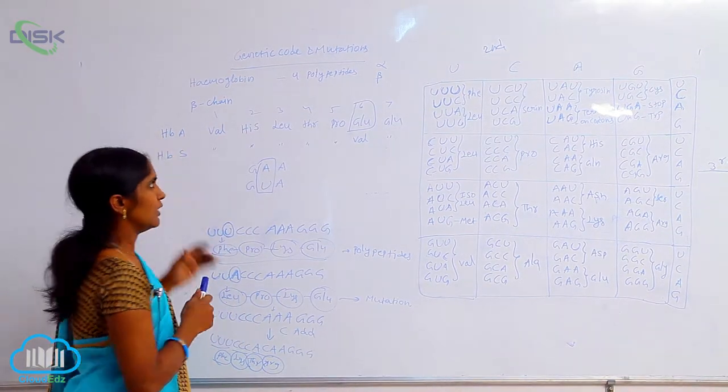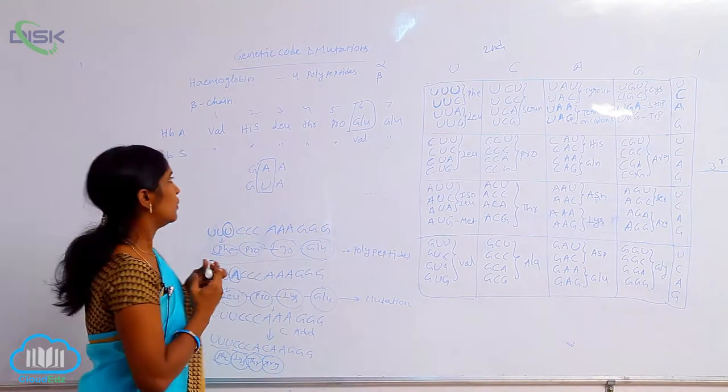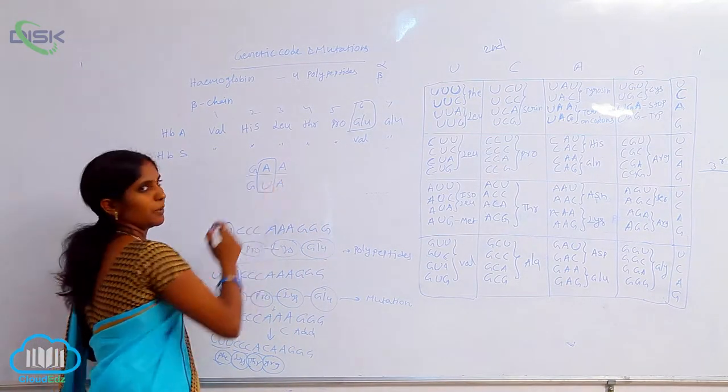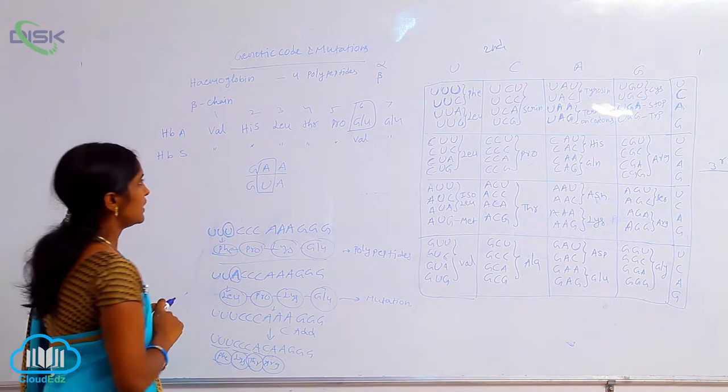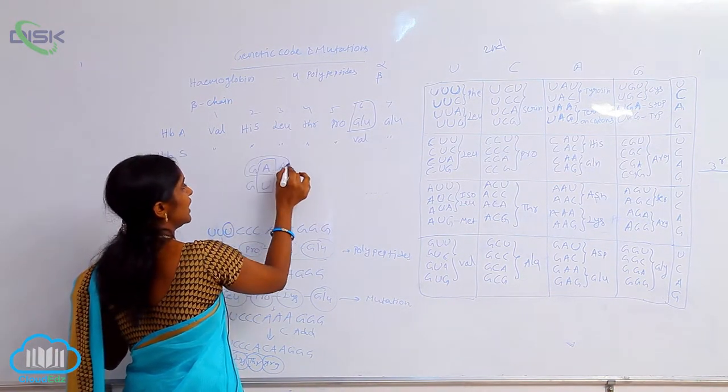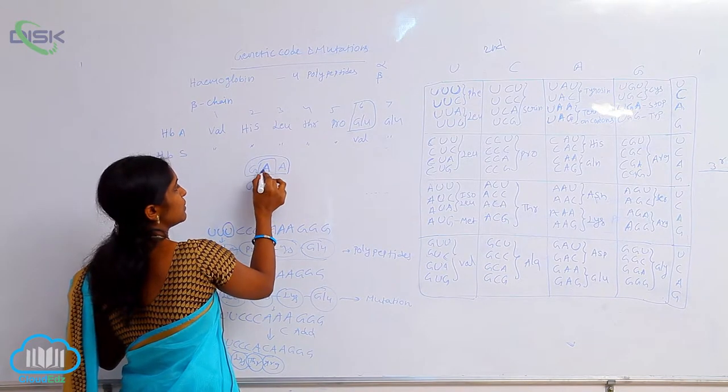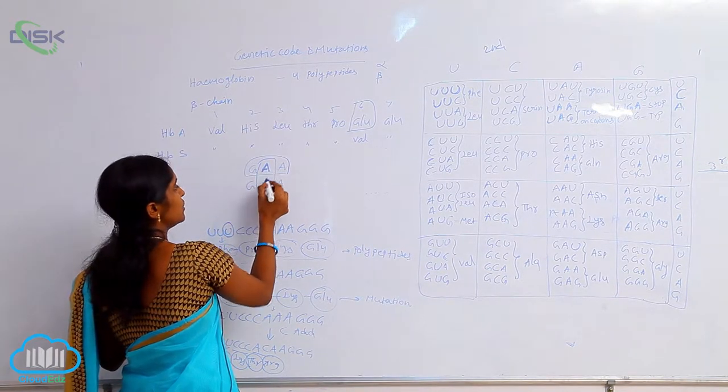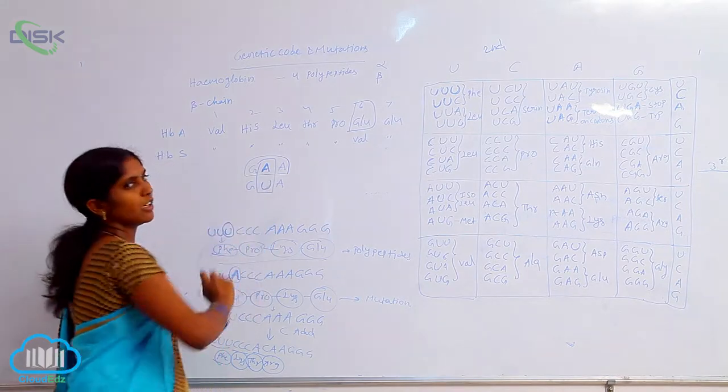Here at the sixth position, the glutamine is coded by GAA. But the A, the second base pair of A, is substituted by U. It means altered by U.